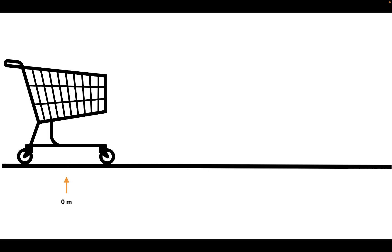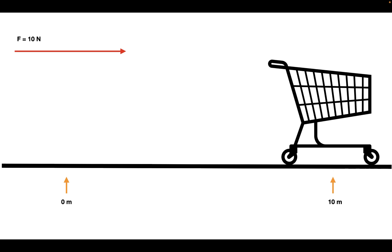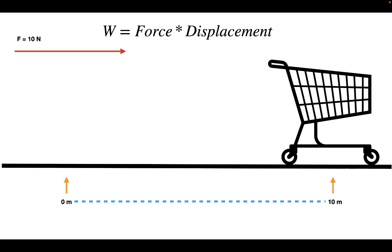I'd like to first start off by discussing what work is in physics. Let's say we have a cart that starts off at a position of 0 meters. We apply a force of 10 Newtons to this cart over a distance of 10 meters. The work done on the cart can be calculated by force times displacement, so 10 Newtons times 10 meters gives us 100 Newton meters.